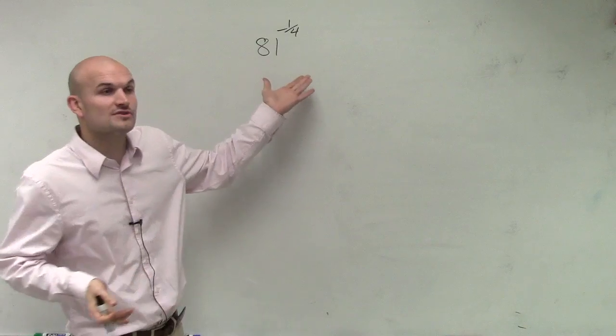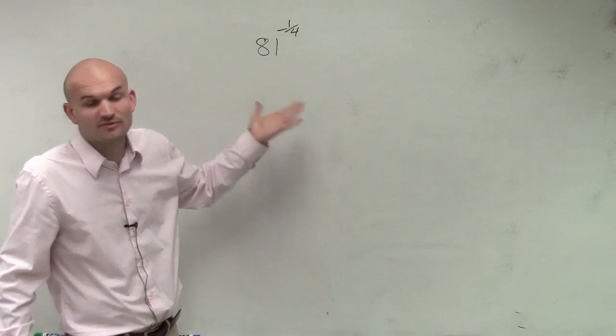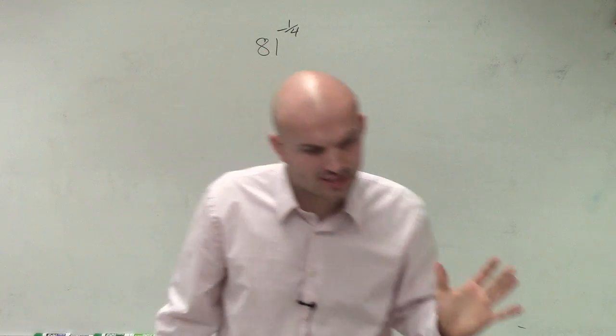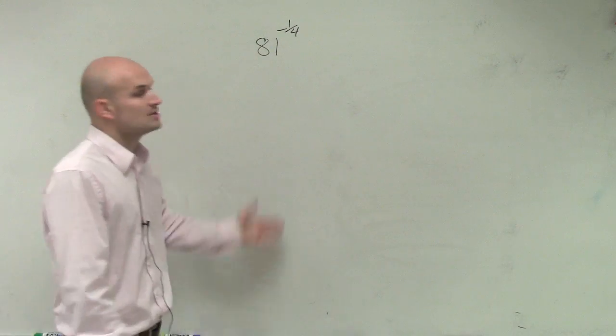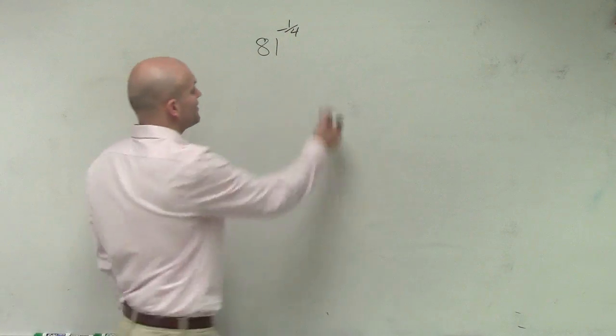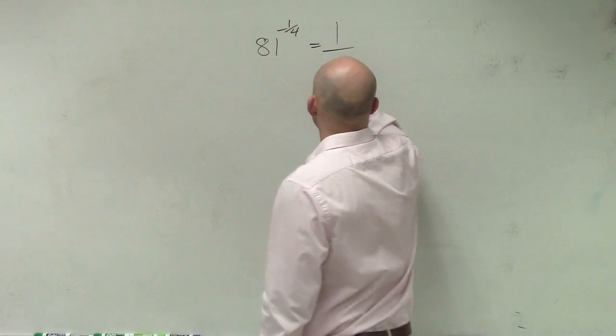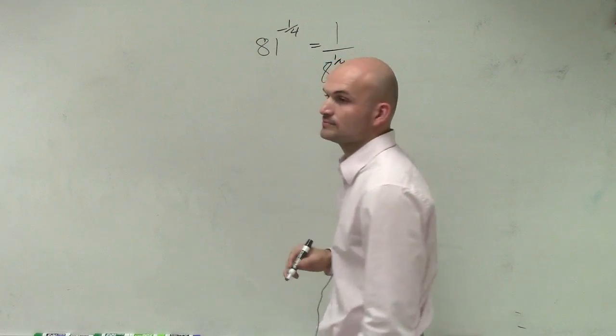The first thing we notice is, before even simplifying this, all the problem is asking us to do is evaluate the expression. So once we have a negative exponent, we know we can rewrite this as 1 over 81 to the one-fourth.